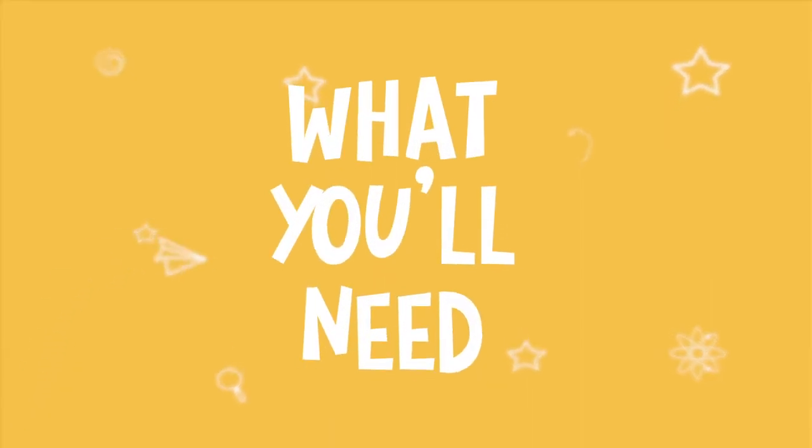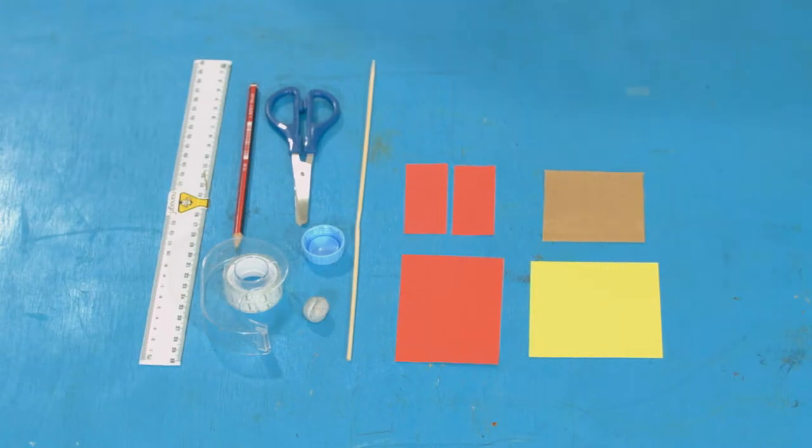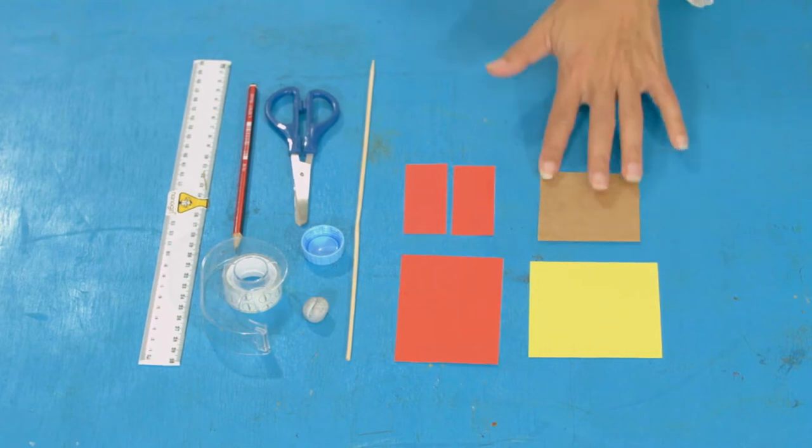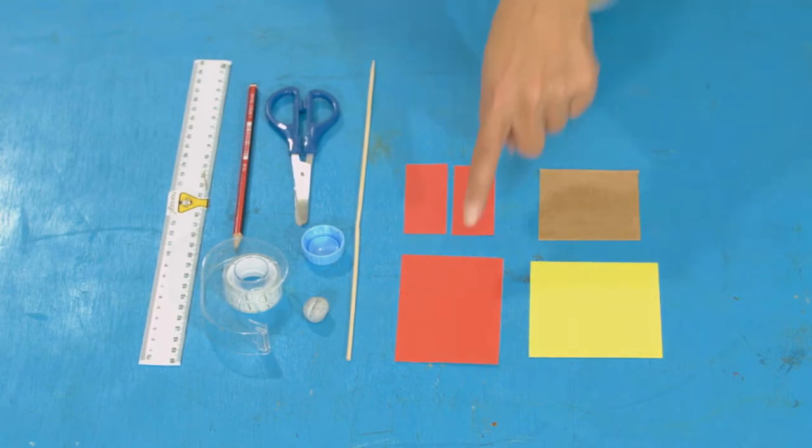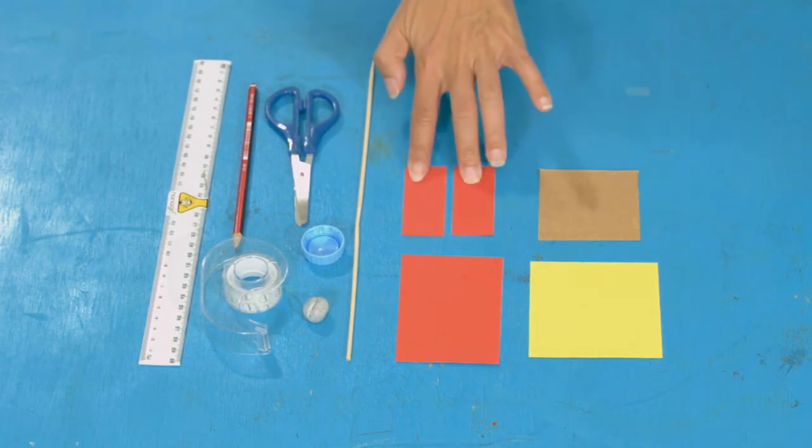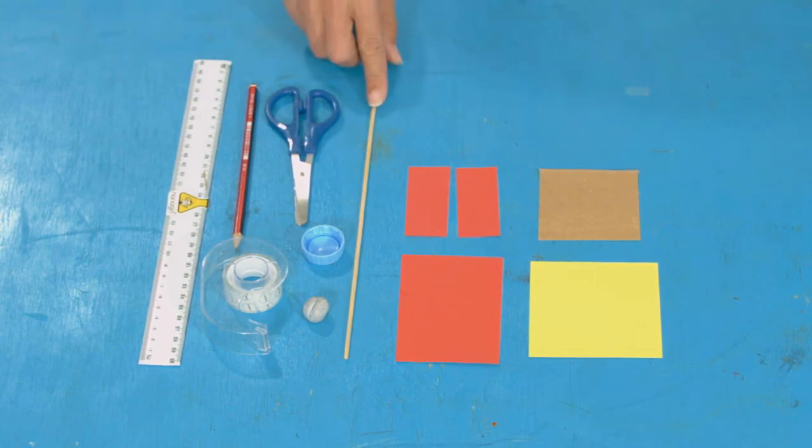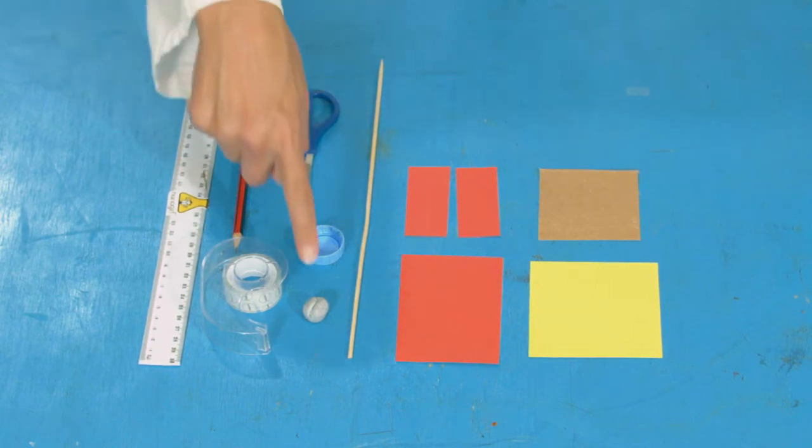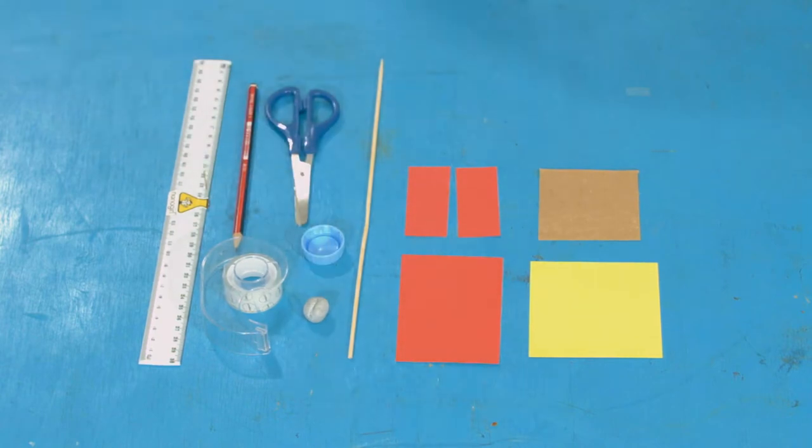Let's get started. You're going to need a square of card nine centimeters by nine centimeters, a piece of stiff card about five centimeters square, a piece of paper seven centimeters wide by ten centimeters tall, two rectangular strips of paper about three centimeters wide and eight centimeters long, a wooden skewer, a small piece of plasticine or blue tack, scissors, sticky tape, a ruler, a pencil, and something small and round to draw around. I've got a bottle top here.